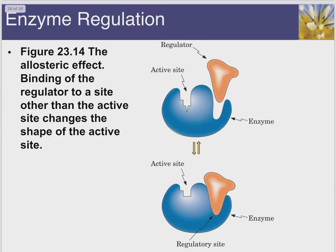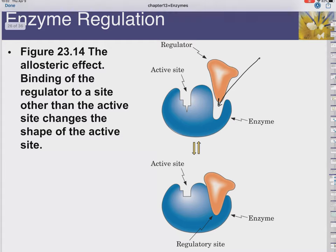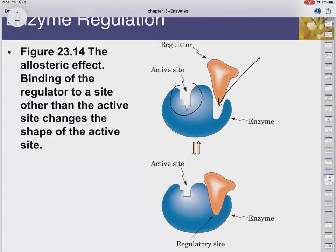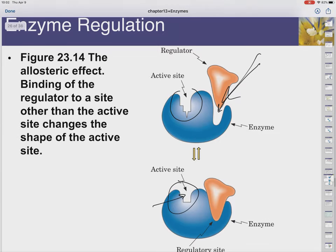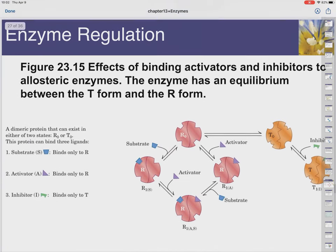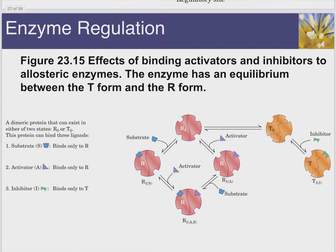So our regulator here comes in, bonds to another spot on the allosteric enzyme, changes the active site, and now it's either activated or inhibited. If this new active site perfectly matches some substrate, this just got turned on — it's an activator. If the change to the active site means a substrate doesn't fit in there anymore, then it's an inhibitor. That's what it means to have allosteric binding and the change to the active site.